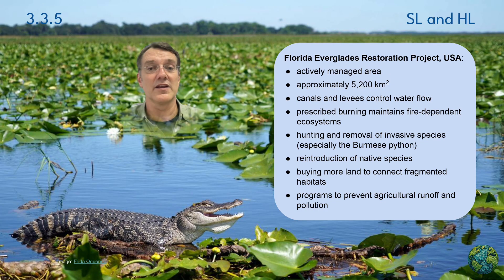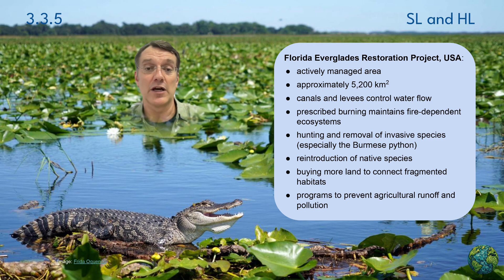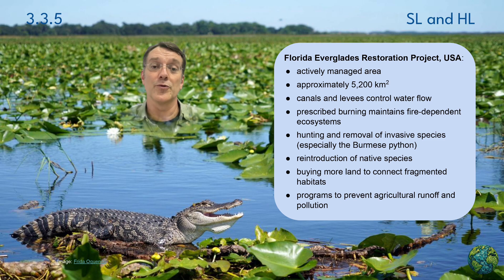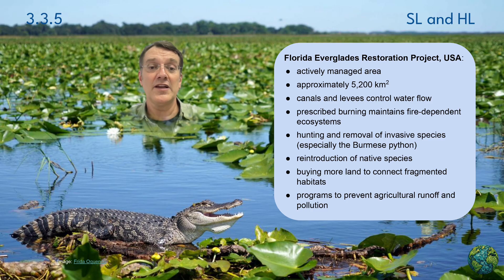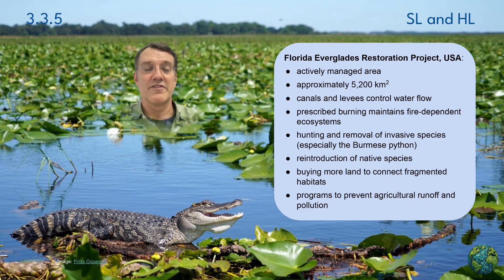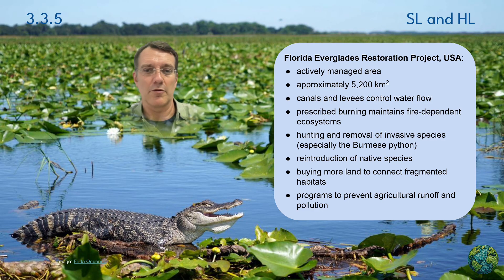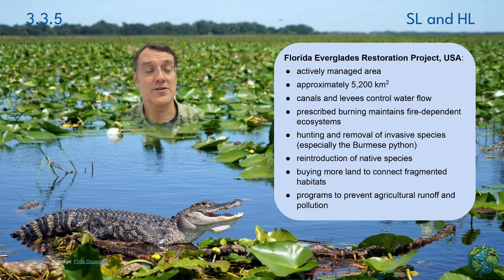By contrast, the Florida Everglades restoration project represents an actively managed conservation area. Approximately 5,200 square kilometers in size, this ecosystem requires human intervention through canals and levees to control water flow, prescribed burning to maintain fire-dependent habitats, hunting and removal of invasive species like the Burmese python, reintroduction of native species, land acquisition to connect fragmented habitats, and programs that prevent agricultural runoff and pollution.